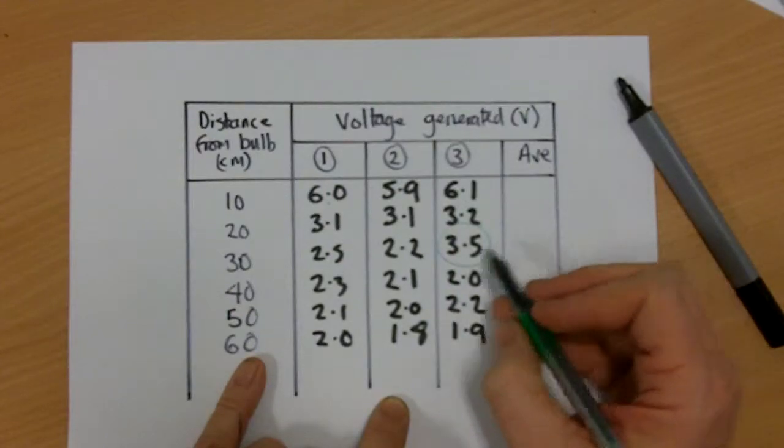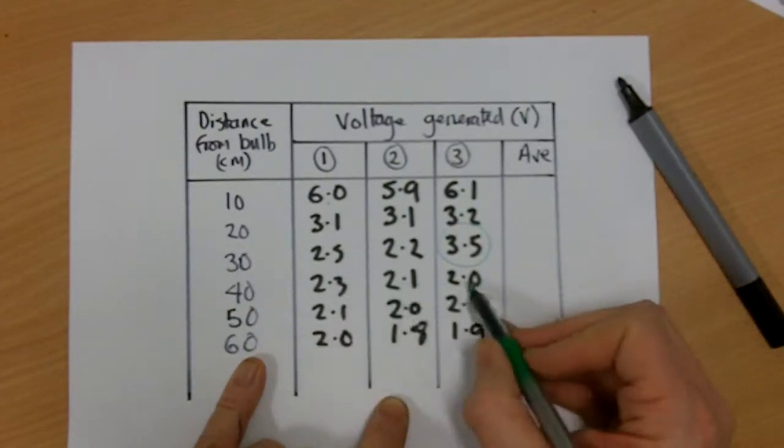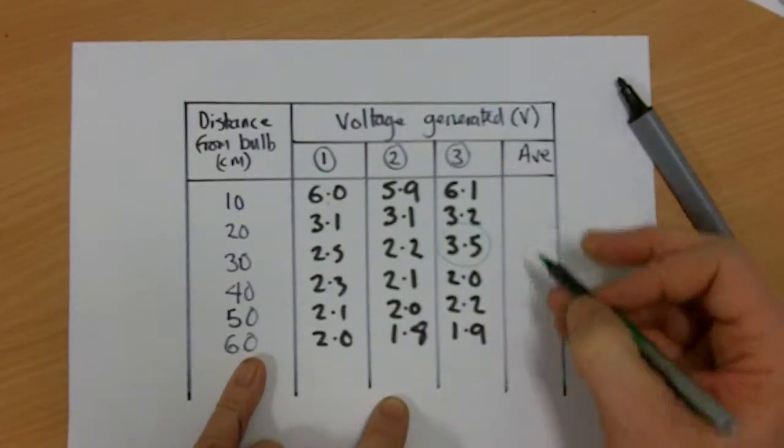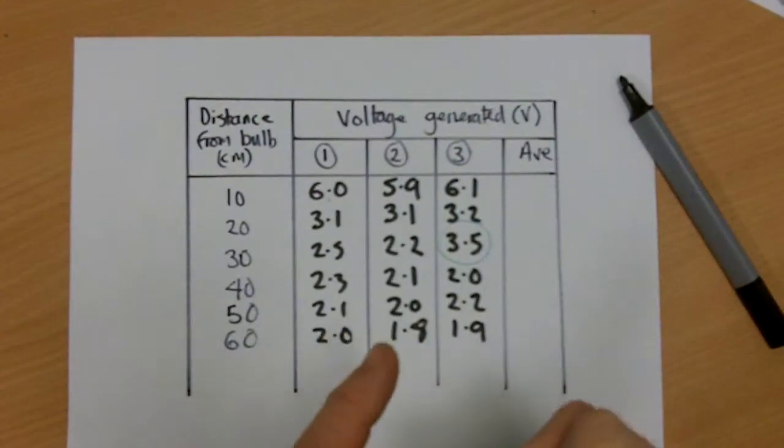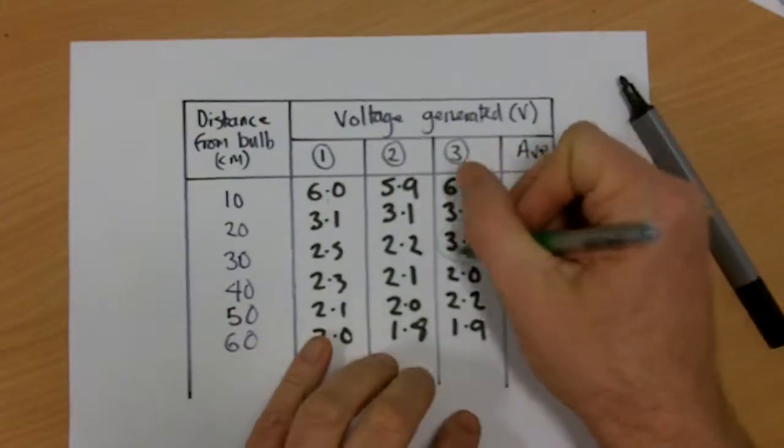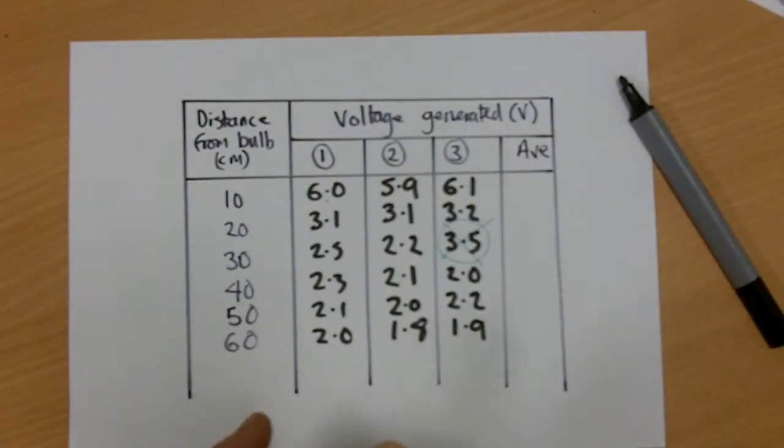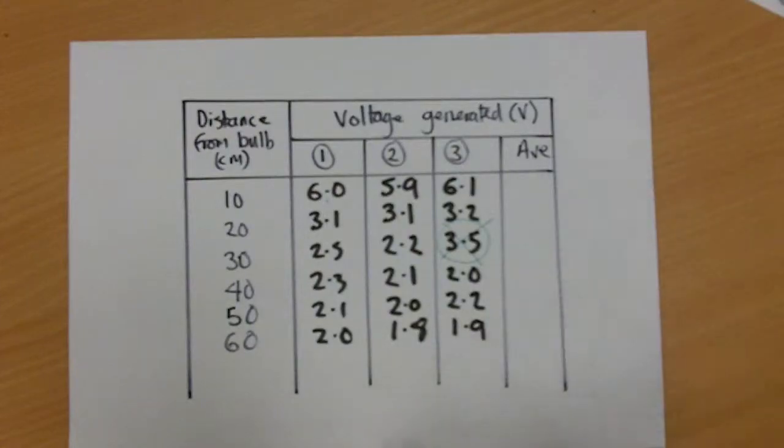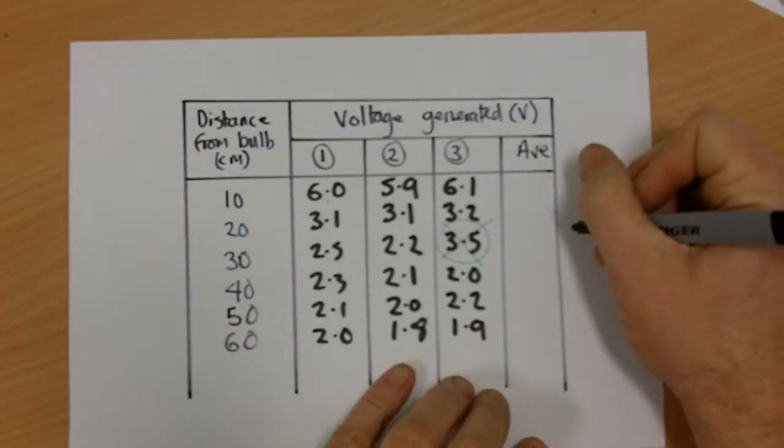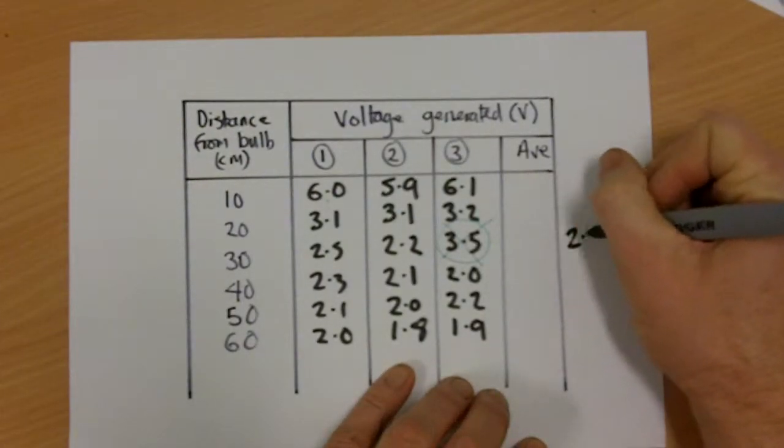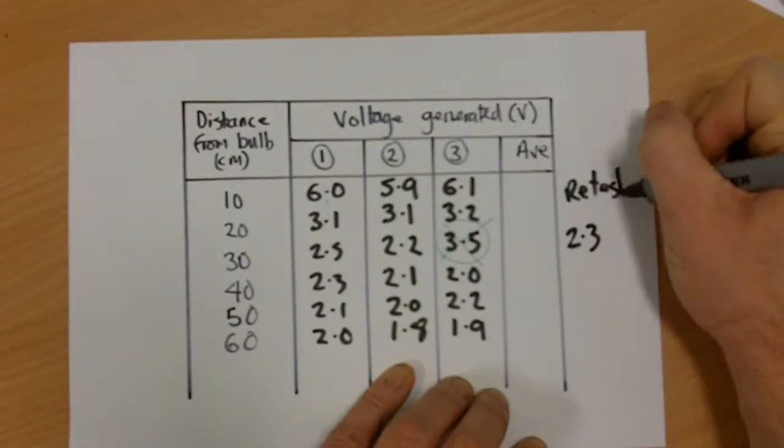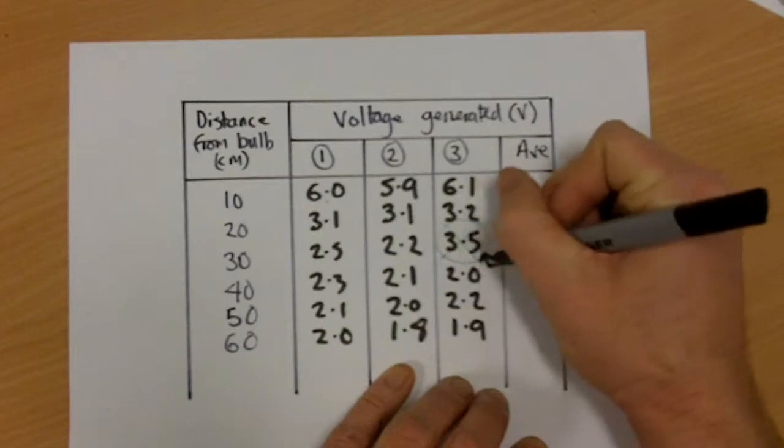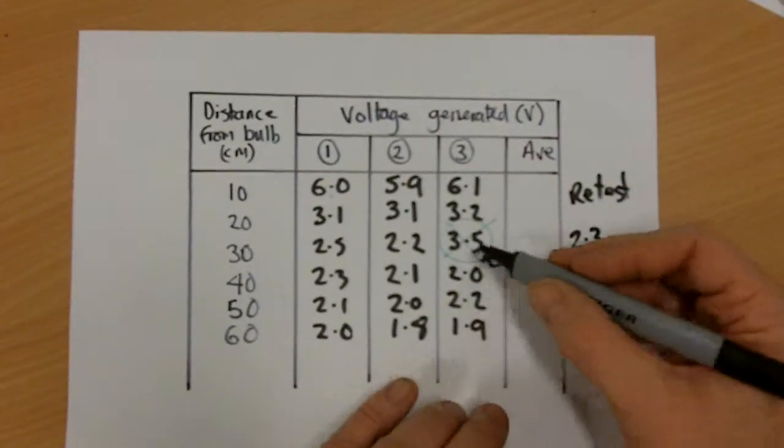It's way different from the rest. So I go down again and again and again. They're all roughly similar. I've got one outlier, I think. Now if you notice that in the lesson, then what you can do is do a retest. So, you can just retest that result and you find out that when you retest it you get an answer of 2.3. And that is absolutely fine. It's fine to show your errors in your working.